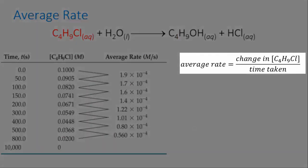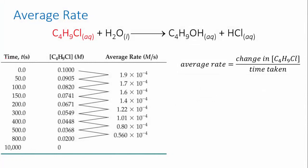We know that the average rate is calculated as the change in concentration over the change in time. We can therefore calculate an average rate for each time interval that we've measured a concentration for.